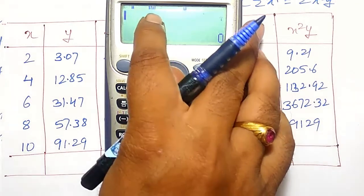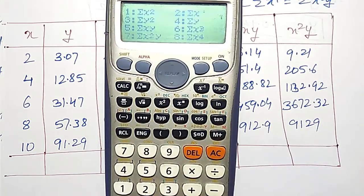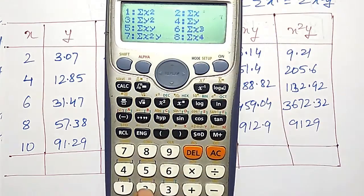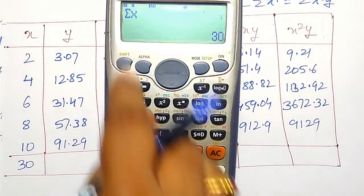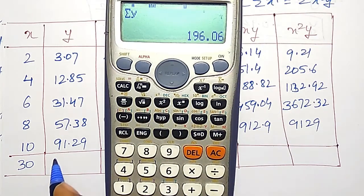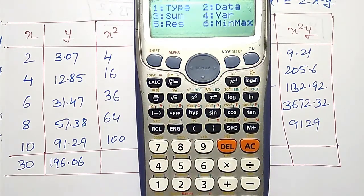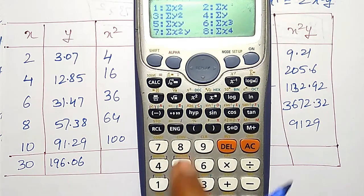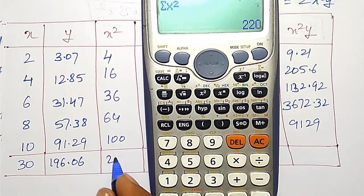As you are in the stat mode, one button stat option is there. Shift y, sum I will have to find out. Sum of x, option number 2, I will get 30. Like that, sum of y I want. Again, shift 1, sum, y summation is option 4, that is 196.06. Like that, x square I want. To find sum of x square, shift, stat, 3, x square option is 1. I will get 220.